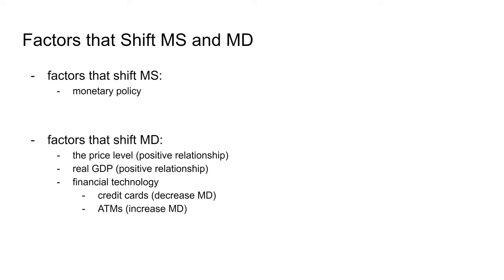Factors that shift the money supply curve are monetary policy — buying or selling government bonds, changing the discount rate, or changing the required reserve ratio. Factors that shift money demand include price level: as prices increase, people demand more money. Real GDP also shifts money demand — as real GDP increases there are more goods to buy, so you need more money. Finally, financial technology such as credit cards decreases money demand, while ATMs increase it.